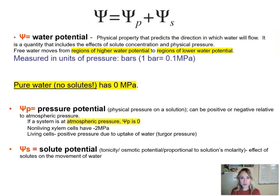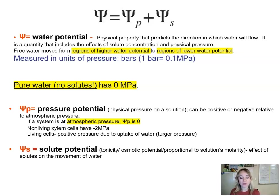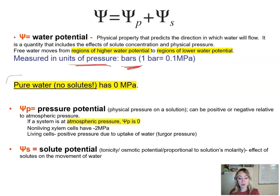Water potential is a physical property that predicts the direction of water movement — water will move from regions of high water potential to regions of low. Water potential is measured in units called bars. Pure water, meaning it has no solutes, will always have a water potential of zero.